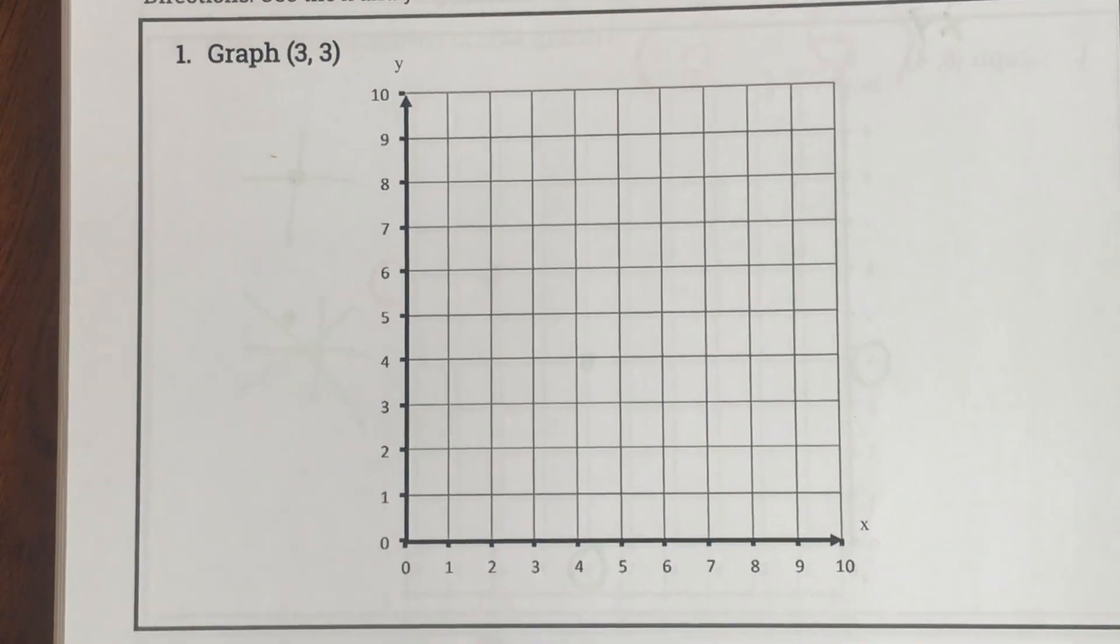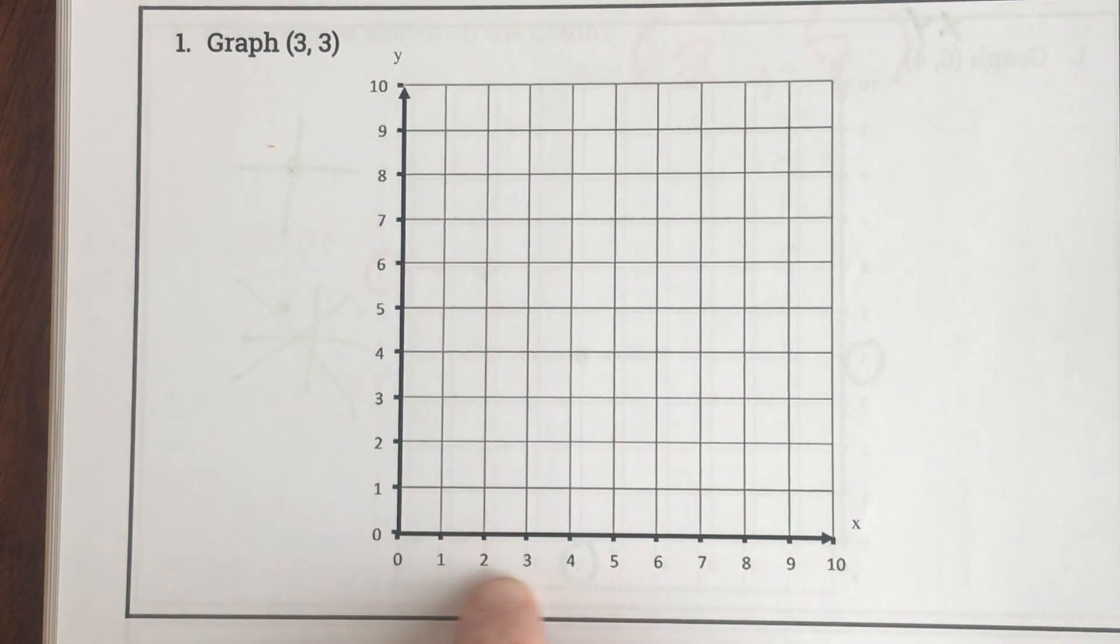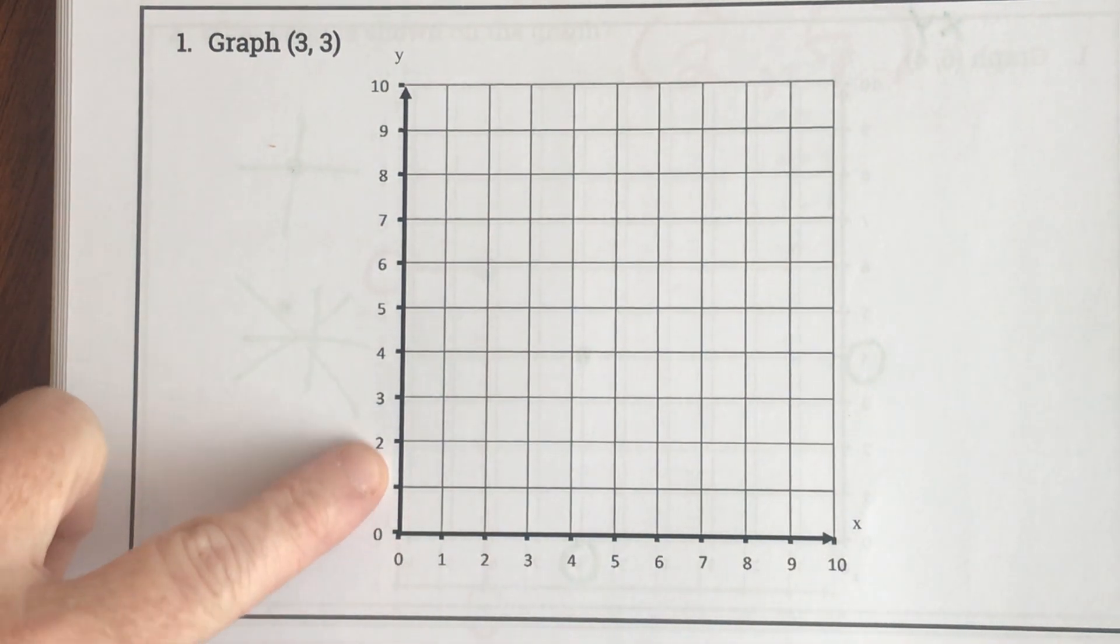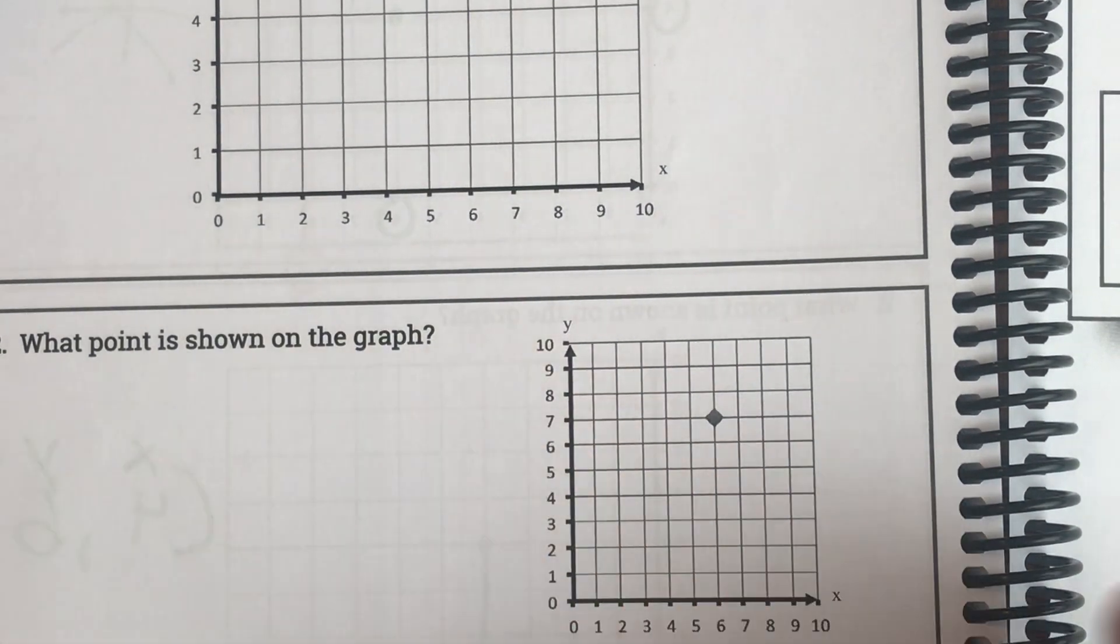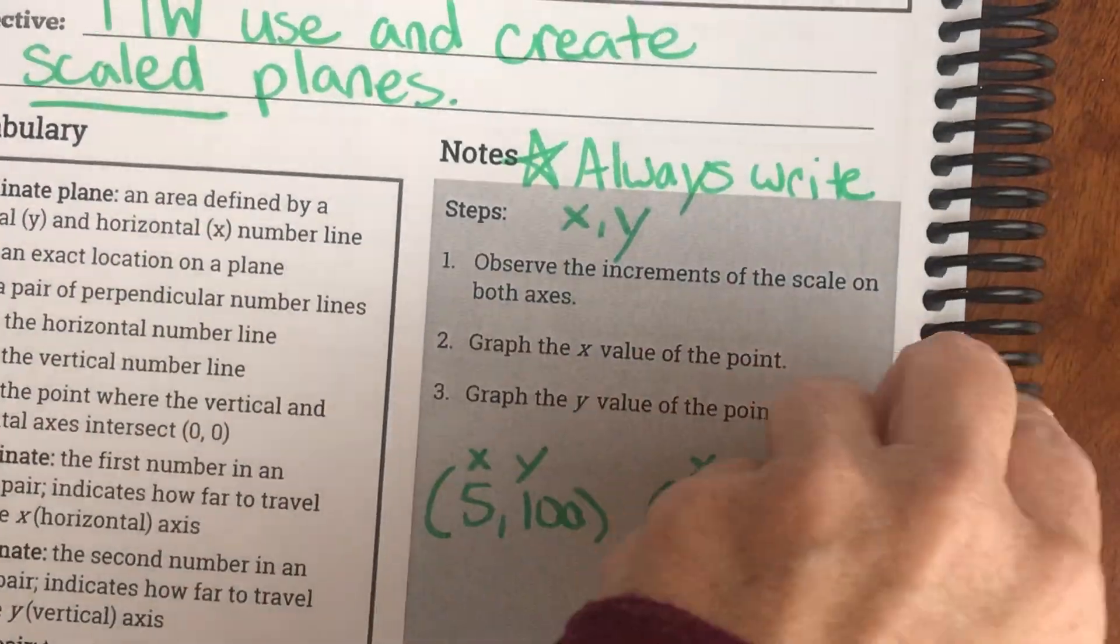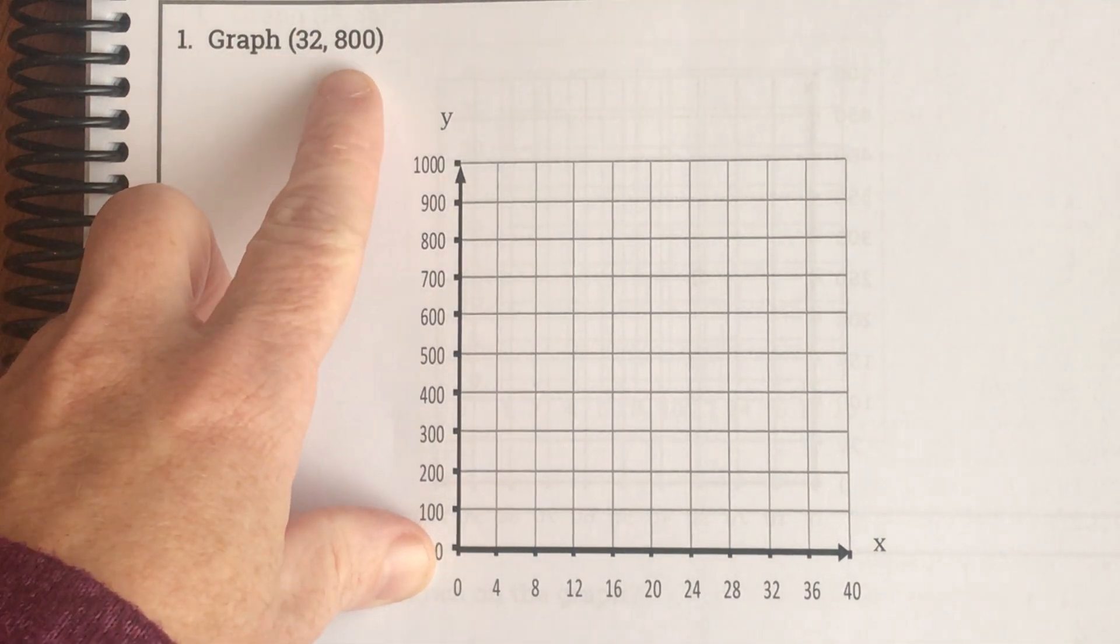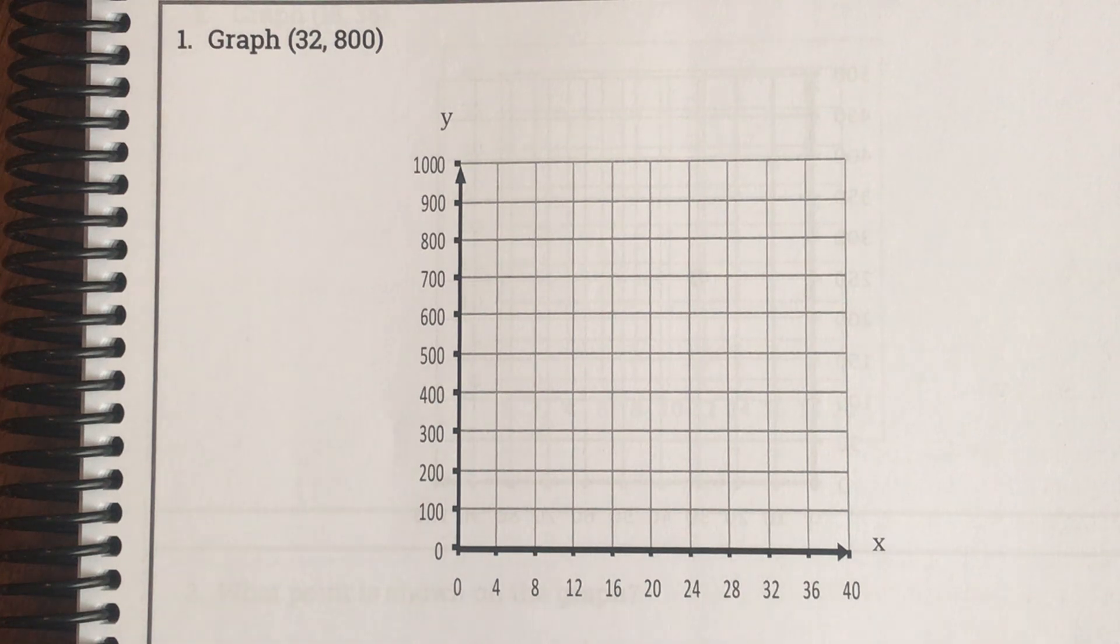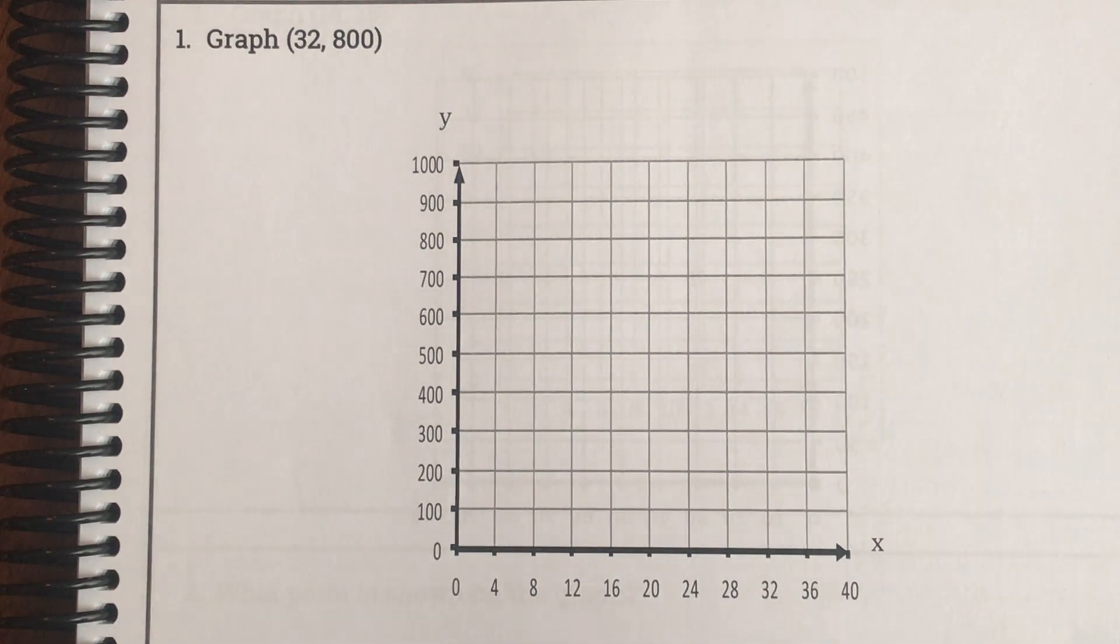I'm going to flip back and show you what we did yesterday. Yesterday, all of our scales were counting by ones. Here the x-axis counted by ones, and here the y-axis counts by ones. Every problem that you did yesterday, the scale was one. But what we're doing today is, when you have very large x-coordinates and y-coordinates, you don't want these massive, gigantic coordinate planes. So what they do is they just change the scale.